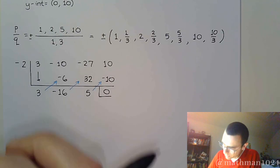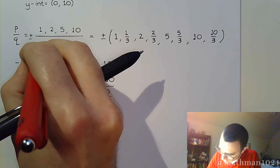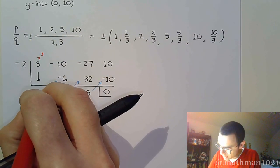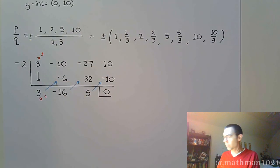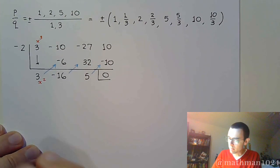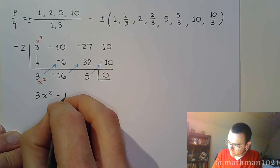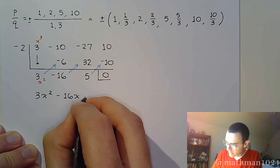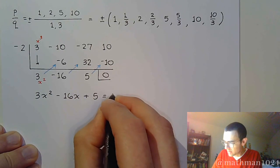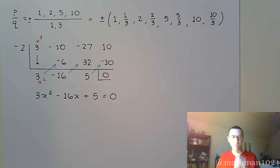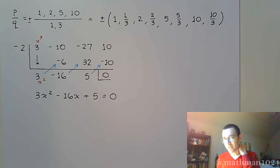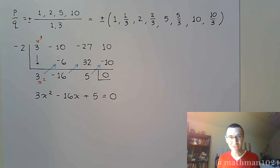The degree drops from 3 to 2. Our quotient gives us the quadratic equation 3x² - 16x + 5 = 0. Just as expected — once we have something quadratic, we can handle it from here. Now we need to factor this quadratic.